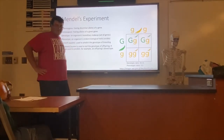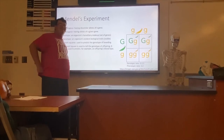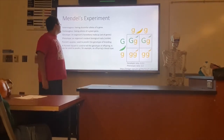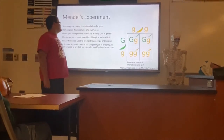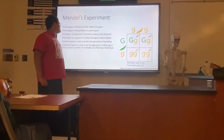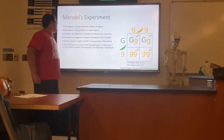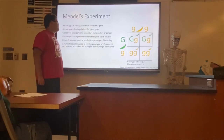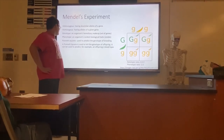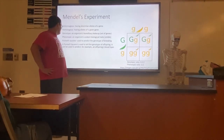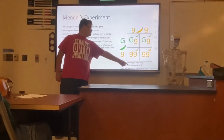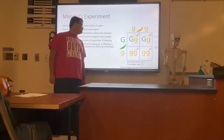We did genetics, and I'm going to tell you a little about Mendel's experiment and how it worked. Heterozygous means having dissimilar alleles of a gene. Homozygous means having identical alleles of a given gene. A genotype is an organism's hereditary makeup, and a phenotype is an organism's biological traits. A Punnett square is used to predict the genotype of offspring — for example, an offspring's blood type. The genotypic ratio here is 0:2:2, and the phenotypic ratio is 2 to 2.